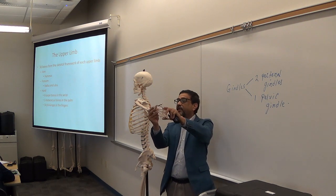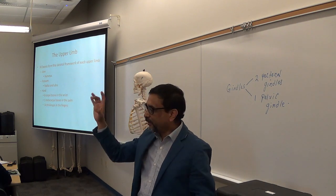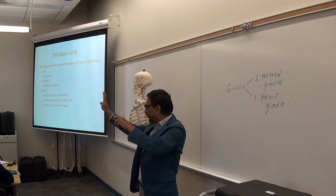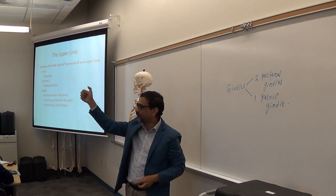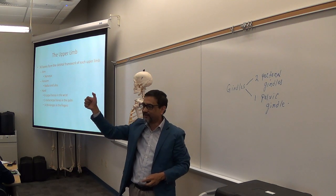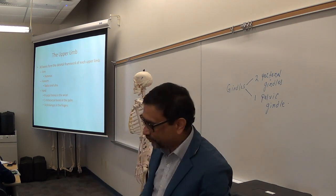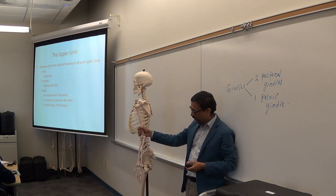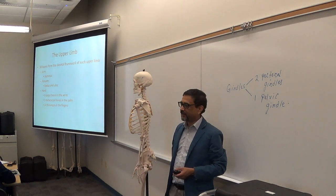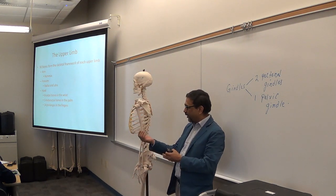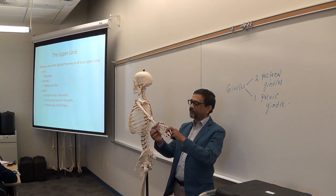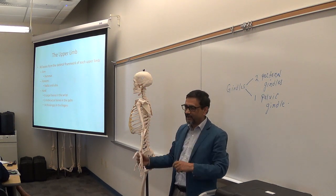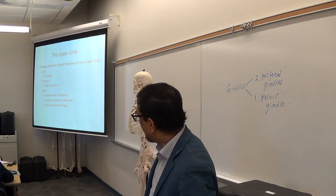And then you have the finger bones called phalanges — fourteen in total. Each of the four fingers has three phalanges, giving twelve, and the thumb has only two, giving fourteen total. So in summary: one humerus, two forearm bones (radius and ulna), eight carpals in two rows, five metacarpals, and fourteen phalanges — thirty bones total in the upper limb.